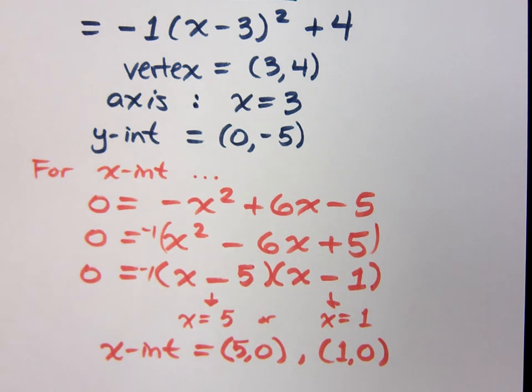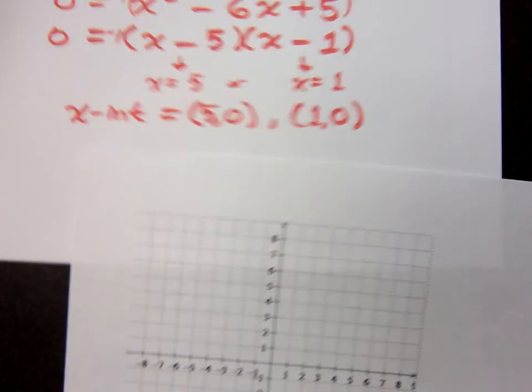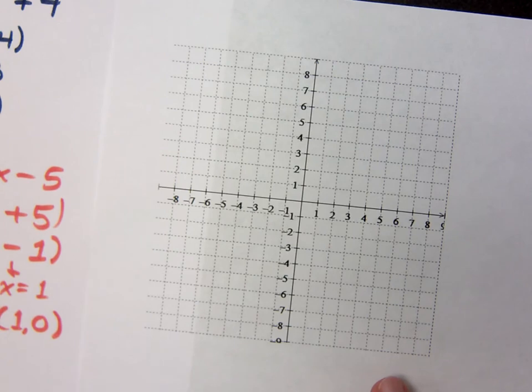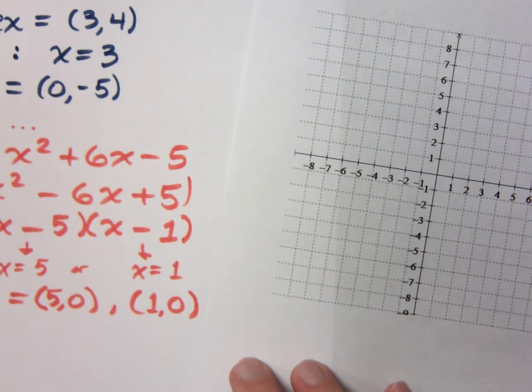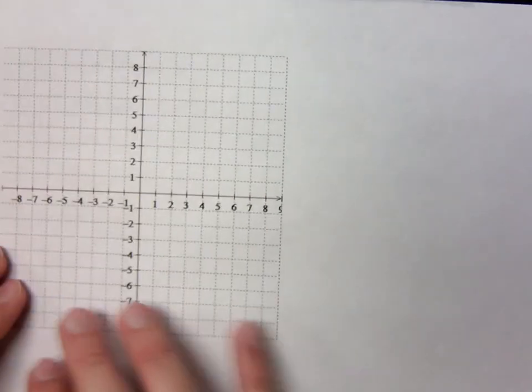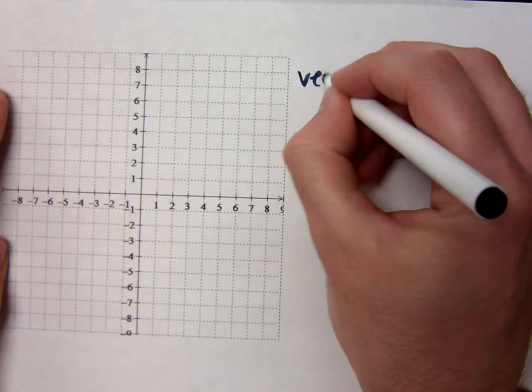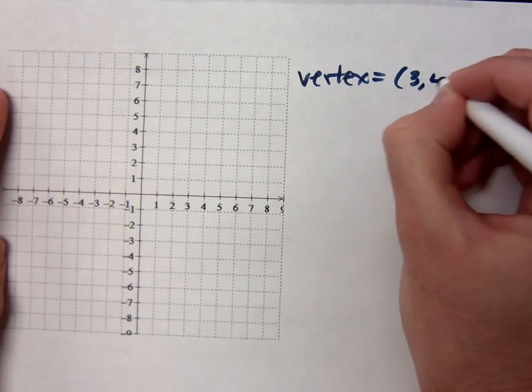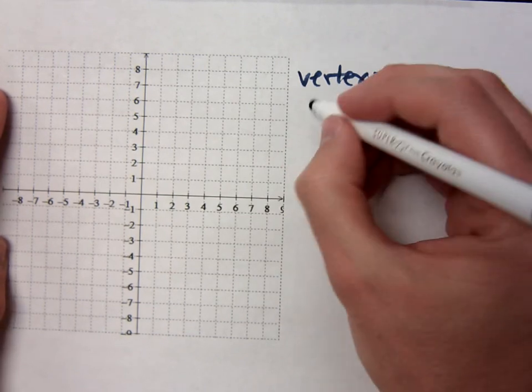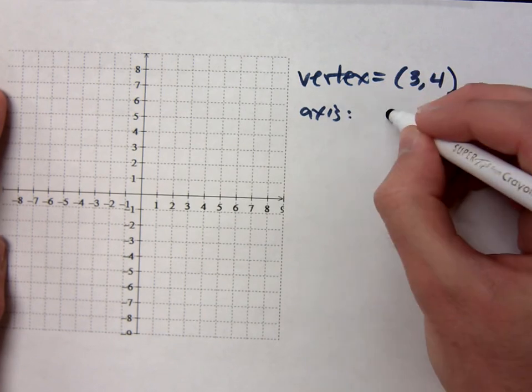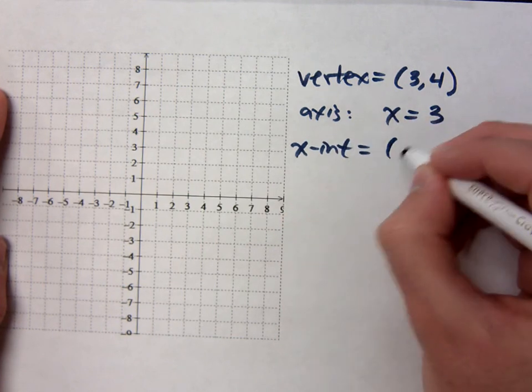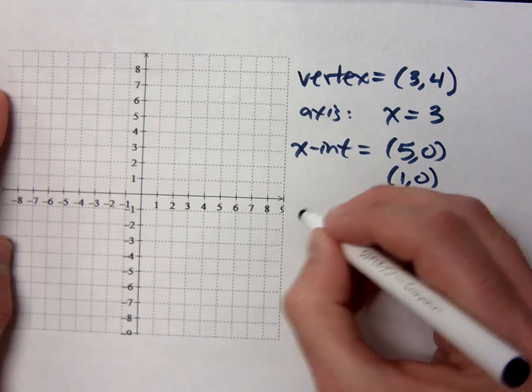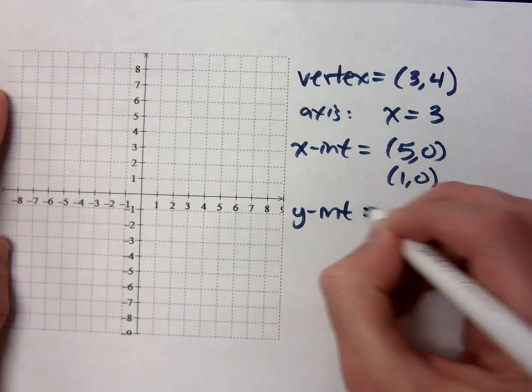So let's take this information and graph this. So, I forgot how I'm going to do this. This just is not going to look right. Well, you got the information already written down, so I can just... So what did we say the vertex was? 3, 4. It's 3, 4. What is your... Let's see the axis of symmetry. X equals 3. X equals 3. You have two nice X-intercepts. 5, 0, 1, 0. What's your Y-intercept? 0, negative 5.